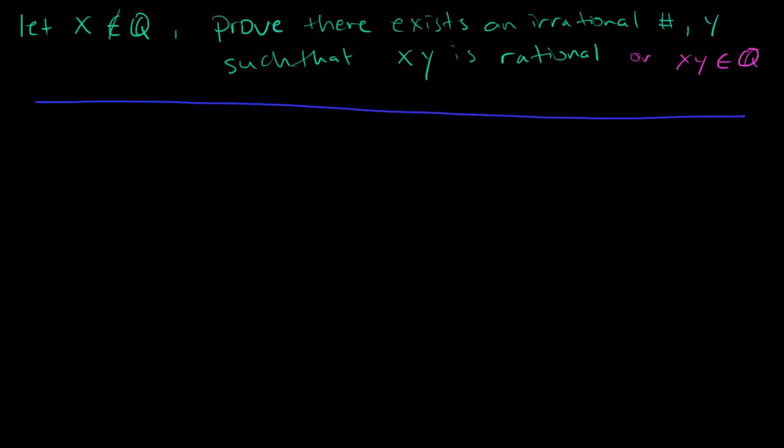So I think this is going to be pretty straightforward. Just start with x is not a rational number, y is not a rational number.